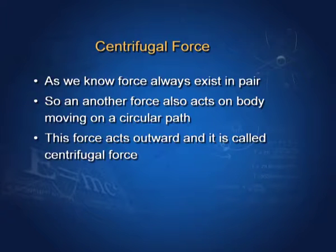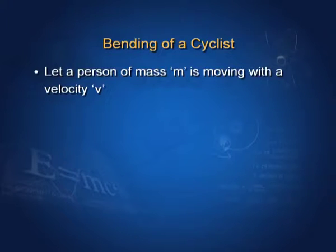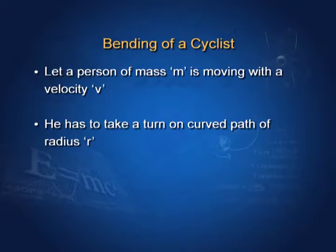Centrifugal force always acts outward, away from the center. For looping the loop, centripetal force and centrifugal force have to be equal. Bending of a cyclist: let a person of mass M is moving with velocity V. He has to take a turn on a curved path of radius R. In order to obtain centripetal force, he has to bend his body in the inward direction of the turn. Let he bends it at an angle theta with the vertical direction.